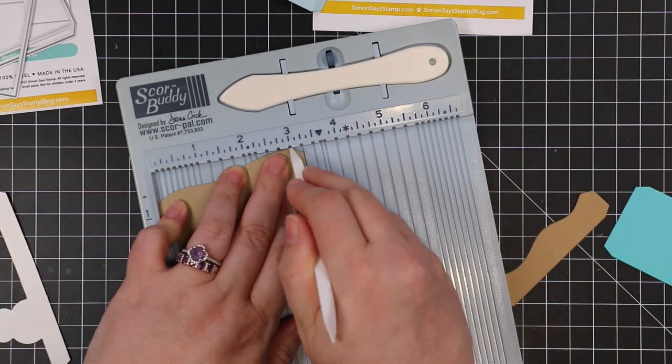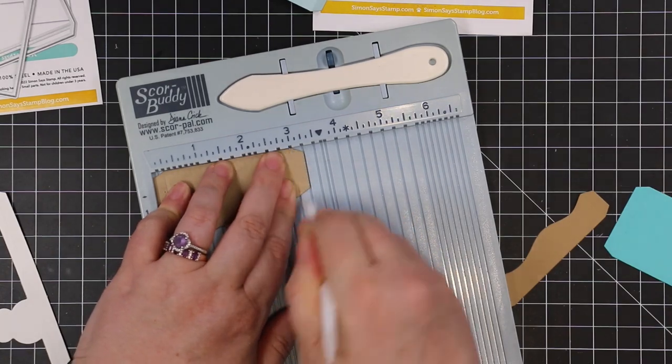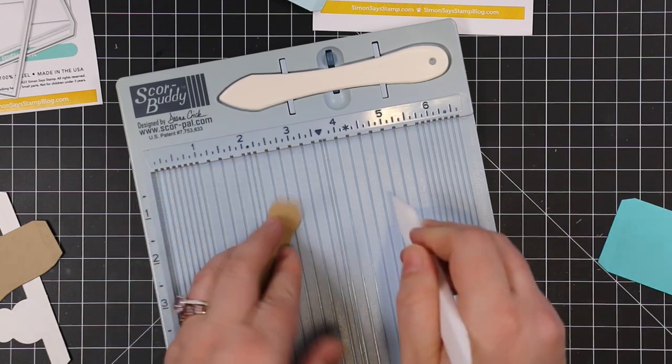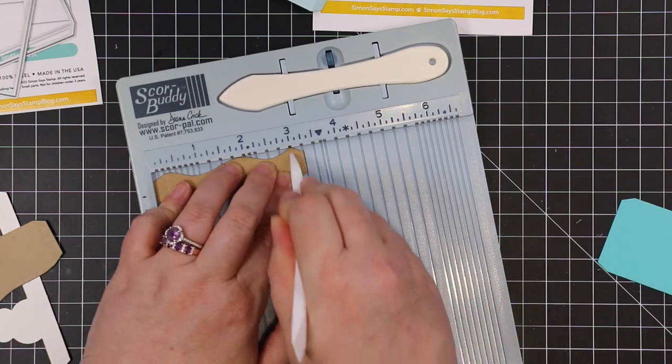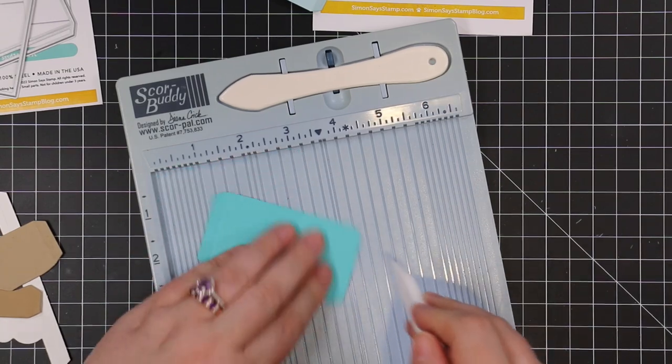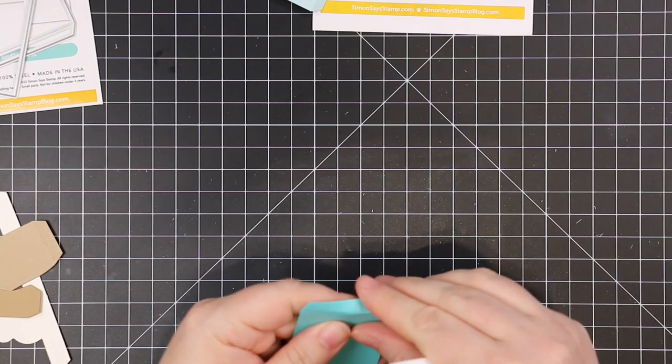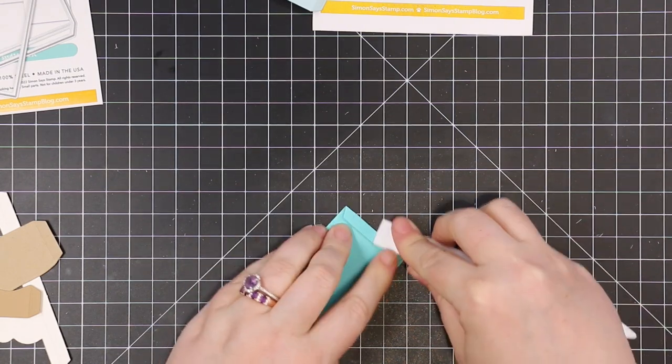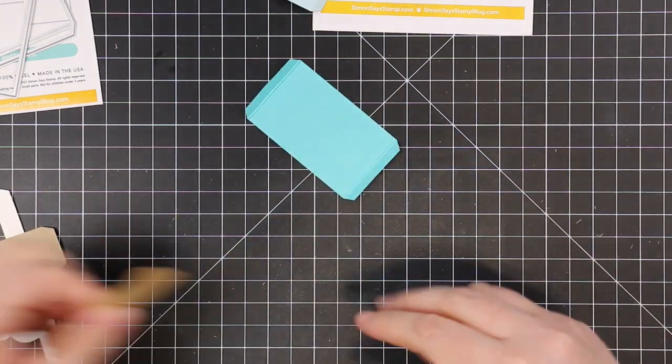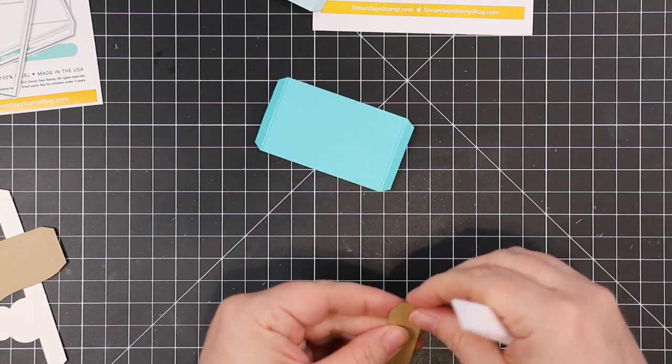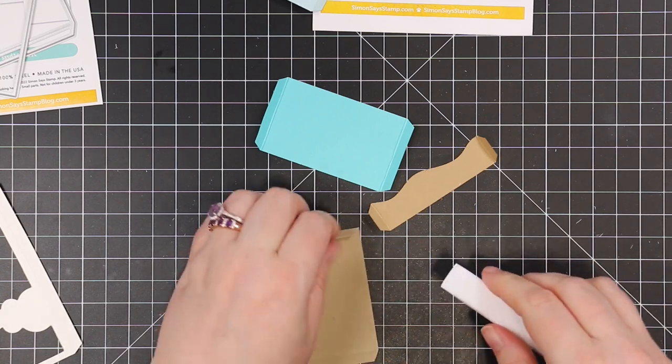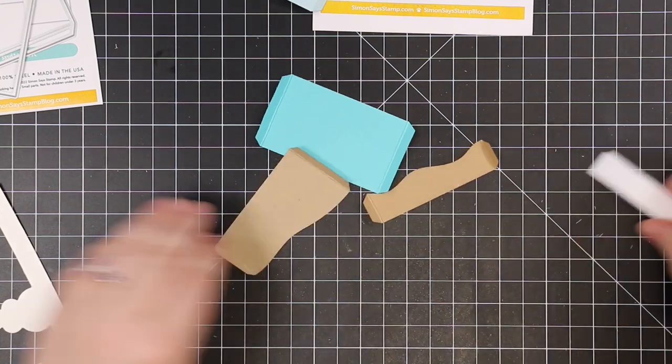For this one, I die cut all the panels from different various cardstocks. Same thing, I'm reinforcing all those little score lines with my bone folder, just going along scoring, and then I'll fold along all of these again. It will make it easier when the time comes to assemble and fold it flat to stick in the envelope. The little extra bit of prep work just makes it easier in the end.